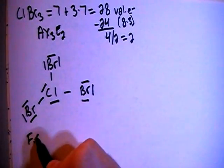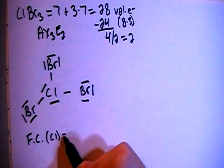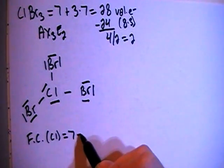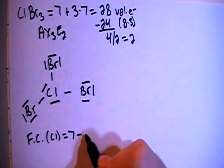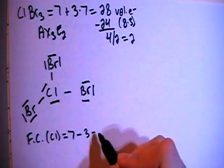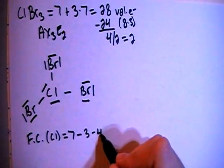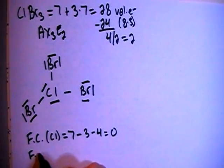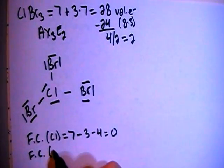So the formal charge on the chlorine is going to be the 7 valence electrons brought in minus 1, 2, 3 bonds minus 1, 2, 3, 4 non-bonding electrons for an overall formal charge of 0.